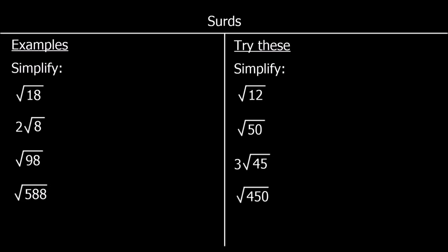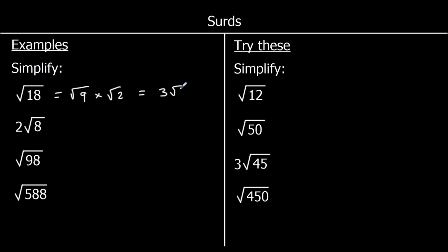Now we're going to look at simplifying surds. A surd is simplified when we've got the smallest possible square root number. We can simplify surds by taking out square numbers. For example, root 18: 18 has got a square number as a factor, and that's 9. So I can change root 18 into root 9 times root 2. Root 9 can be written as 3, so root 18 can be written as 3 times root 2, or 3 root 2.